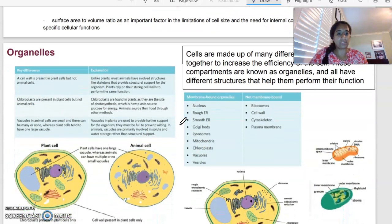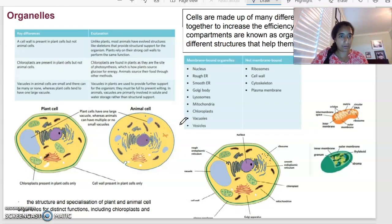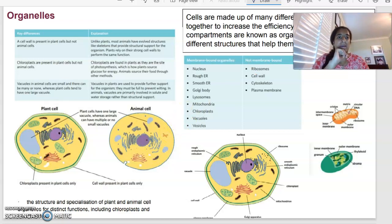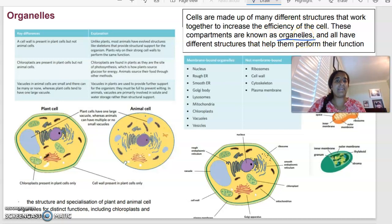Organelles. Organelles are basically the organs of a cell—that's the way I like to think of it. They're all inside the cell, they all have their own function. Cells are made up of different structures that work together that increase the efficiency of the cell and its ability to survive and do its job. Those compartments are what we call the organelles, and they all have a specific function.